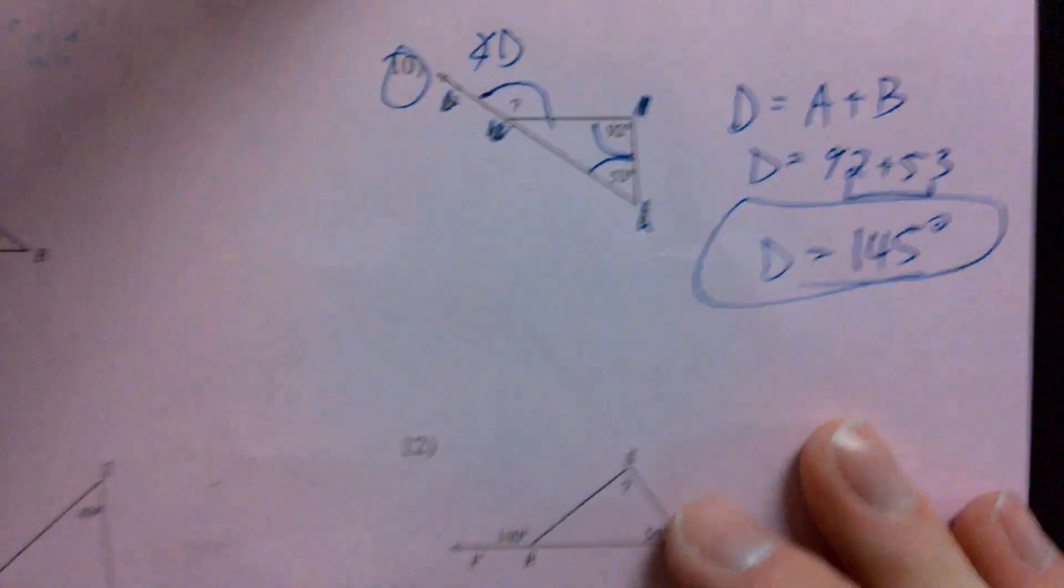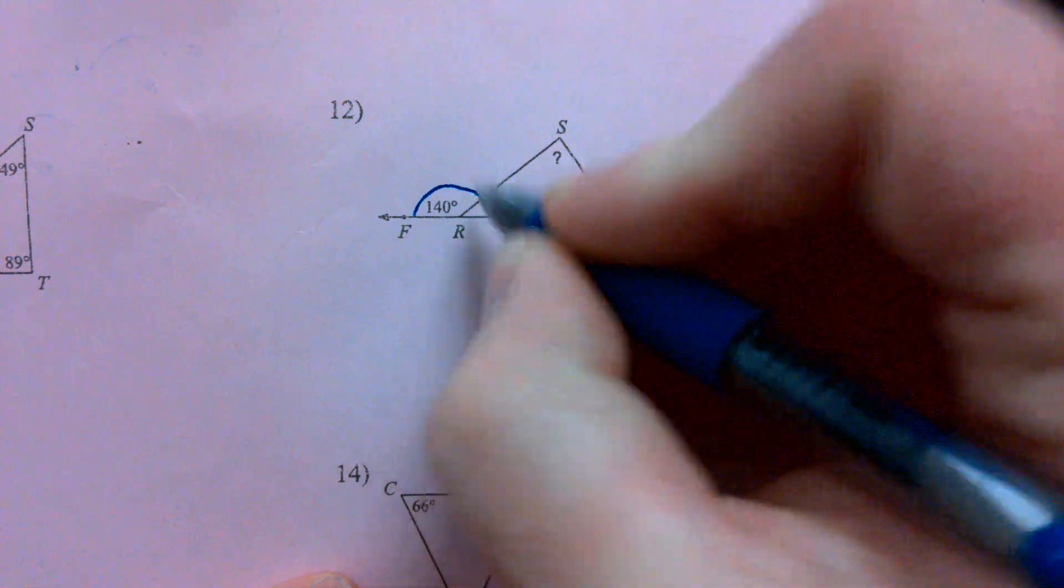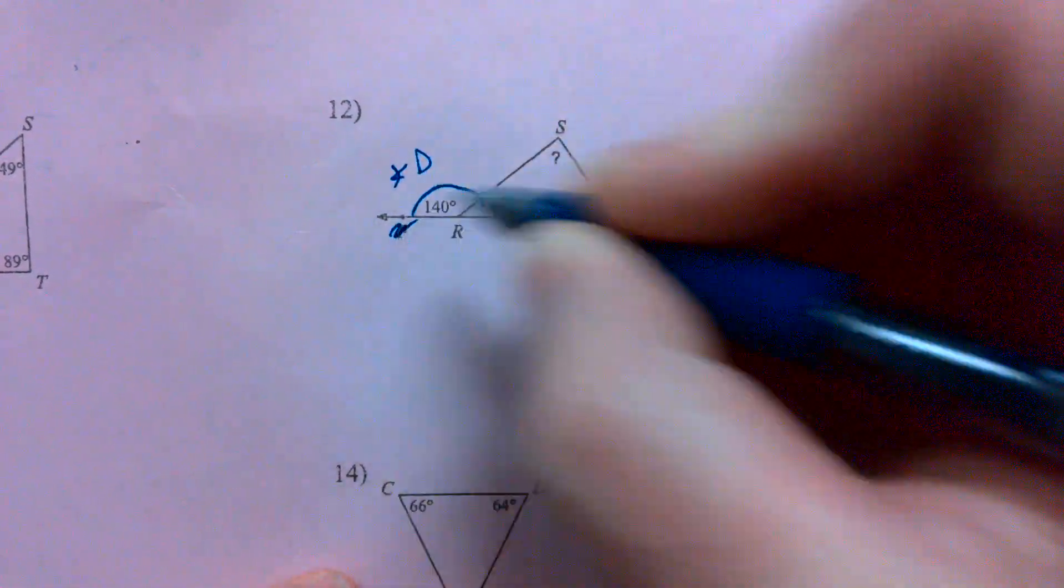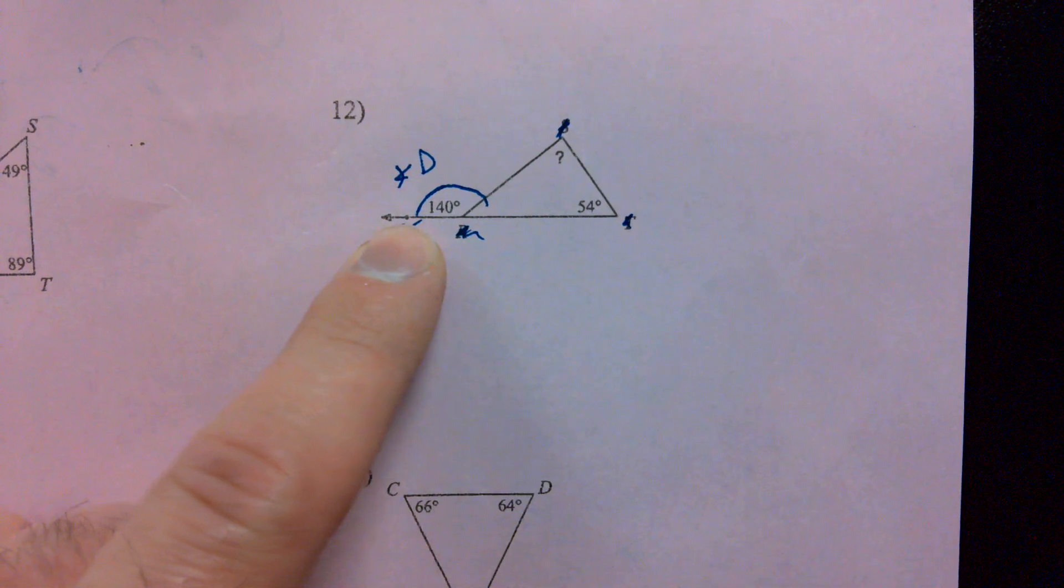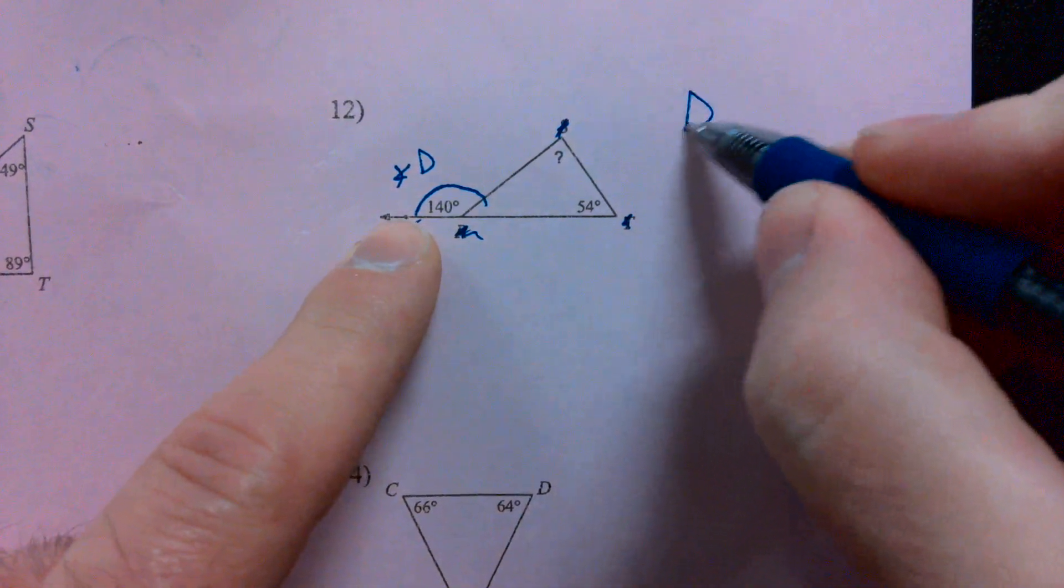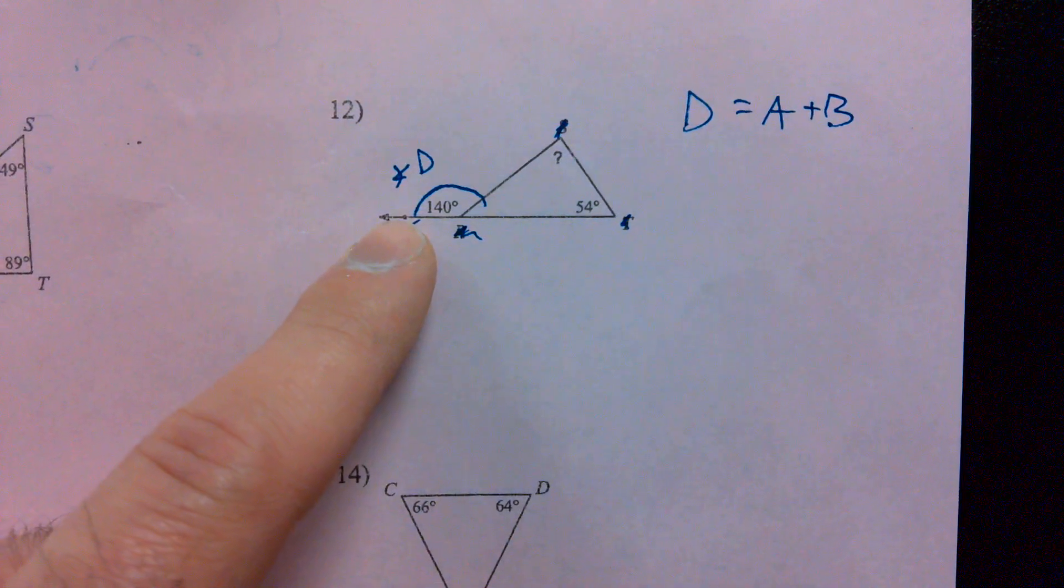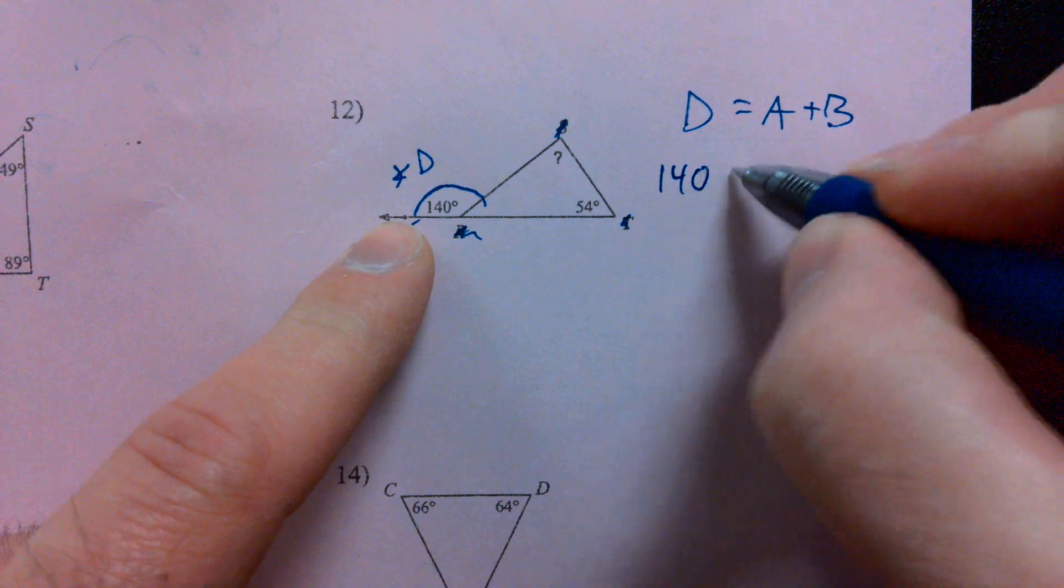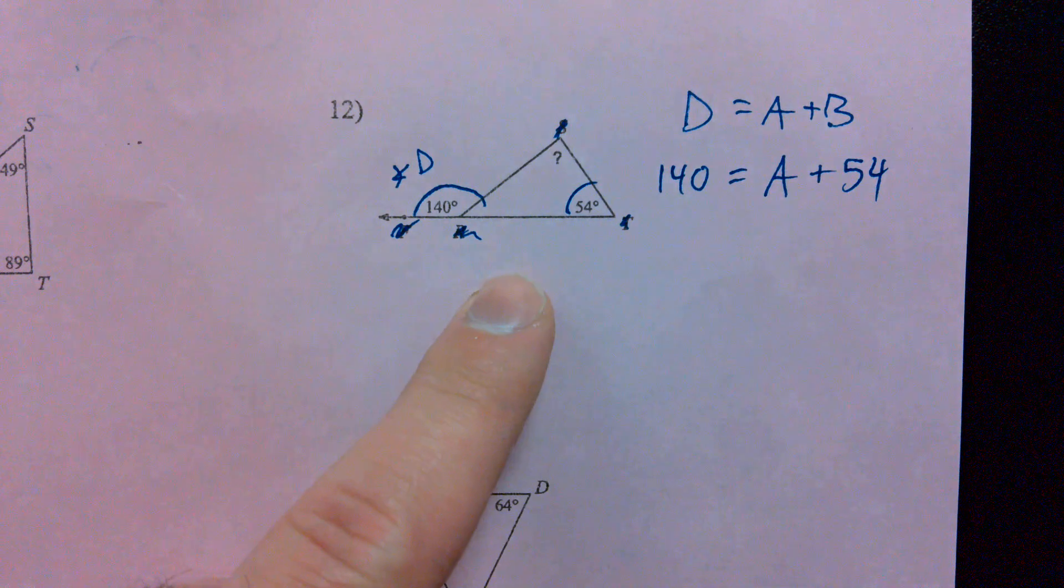And just in case you need to go back and review this before the test, we'll look at something like number 12, where we do know what angle D, my exterior angle, is. That's 140 degrees. So, if I'm setting up D is equal to A plus B, what do I plug in for D? 140. Equals A plus one of my interior angles, 54.